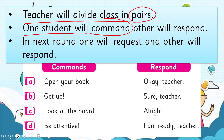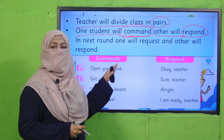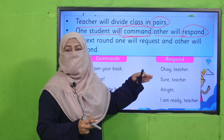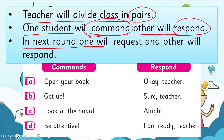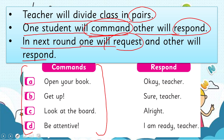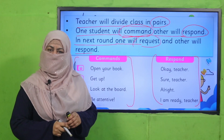One student will command and the other will respond. Since you are of equal age, it's just a role play — maybe one becomes the teacher and the other becomes the student, or one becomes the father and the other becomes the son. In the next round, one will request and the other will respond. Pause the video, enjoy the activity, and then come back.